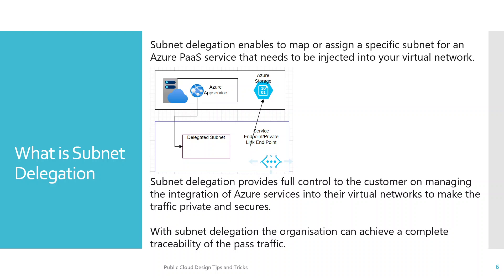Subnet delegation enables you to map or assign a specific subnet for an Azure PaaS service that needs to be injected into your virtual network. In an organization, you have private IP spaces and a private network boundary. You want traffic originating from Azure PaaS services — which sit outside your secure boundary — routed through your private boundary for proper traceability. Subnet delegation provides full control to the customer on managing the integration of Azure services into virtual networks to make the traffic private and secure.